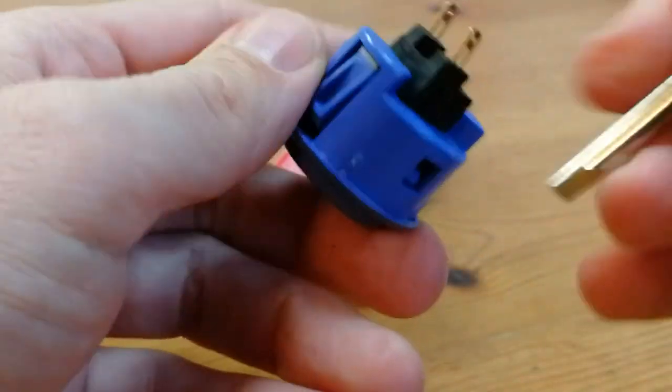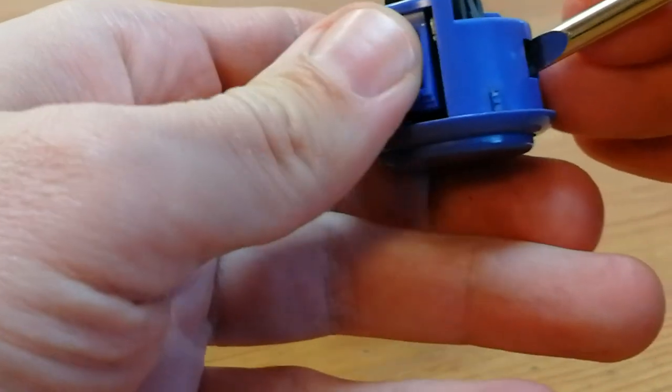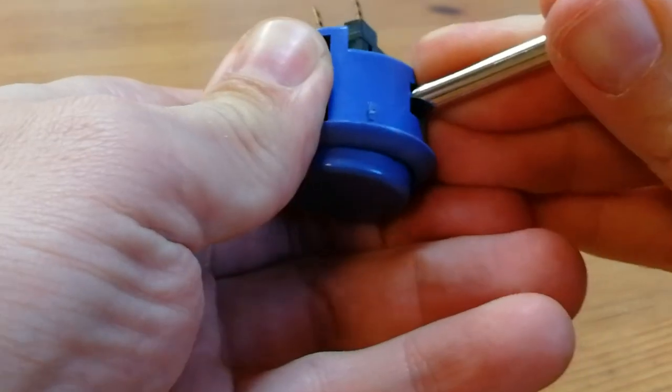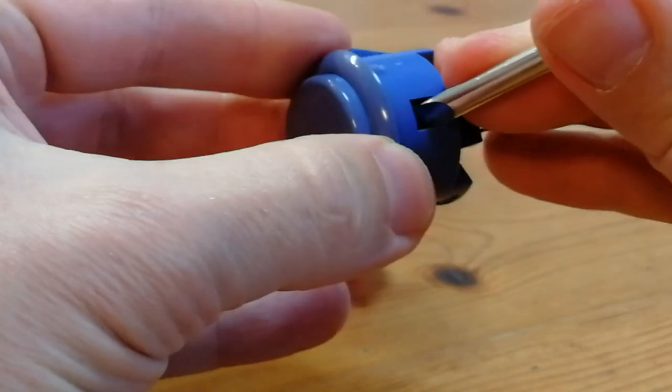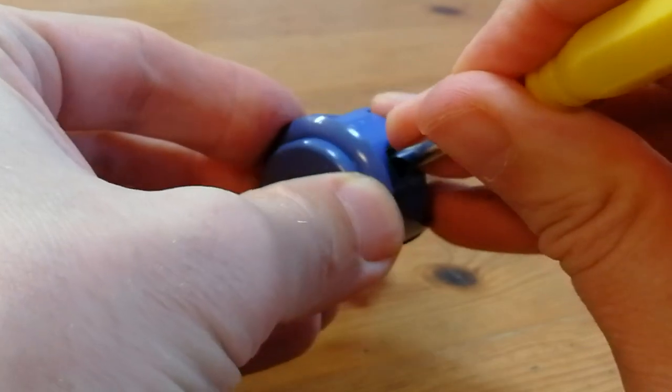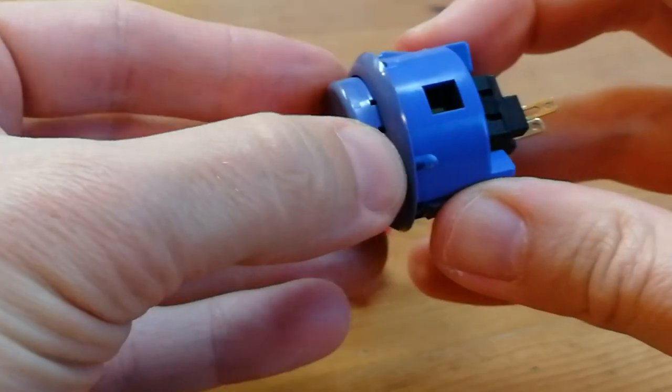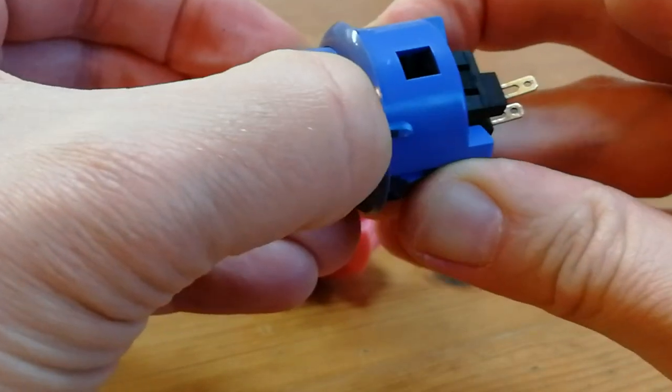And you see the latch, it's stopping it from coming out. So we're gonna use the screwdriver and push it in and out on both sides, and be able to pull out this plastic piece.